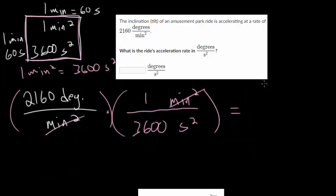2160 divided by 3600, or 216 divided by 360. This simplifies to 0.6. Our units will be degrees per second squared. 0.6 is what we put in the box here.